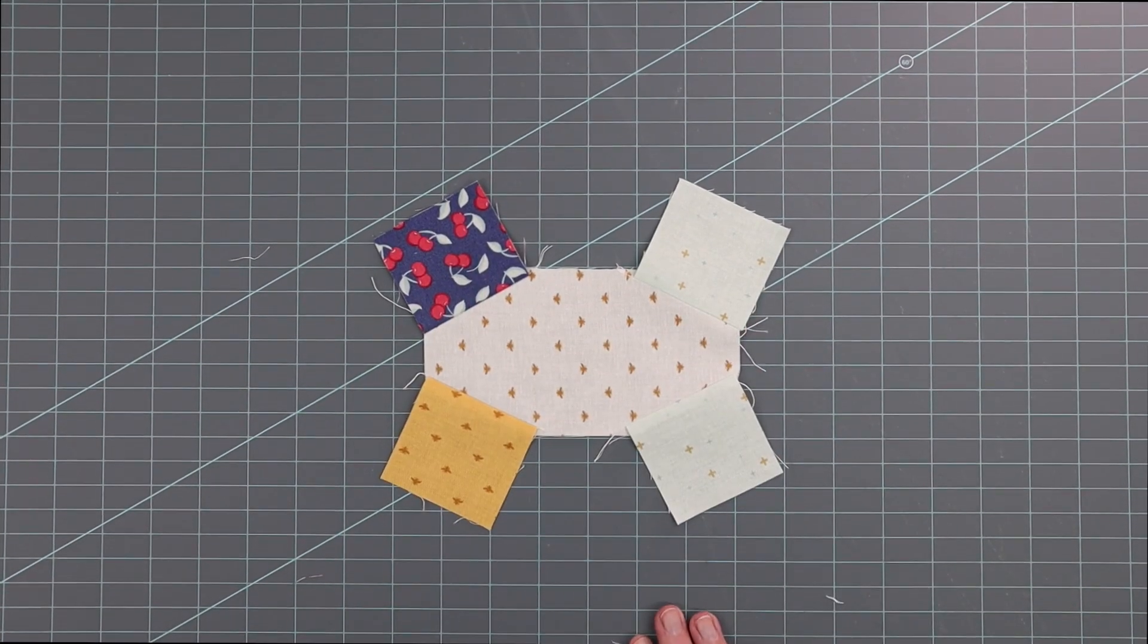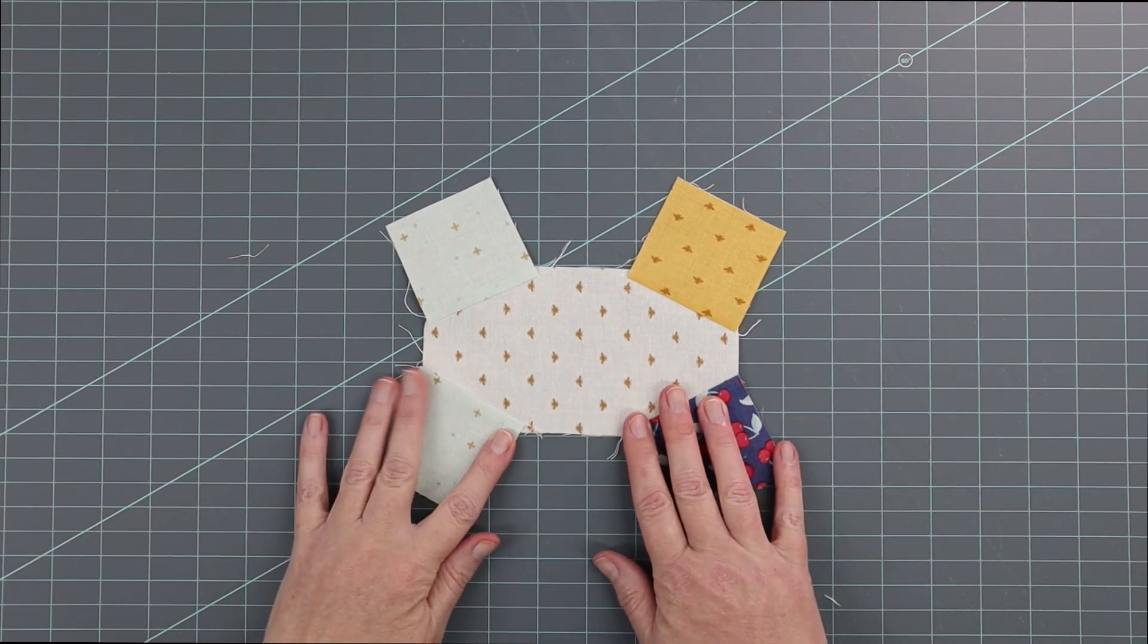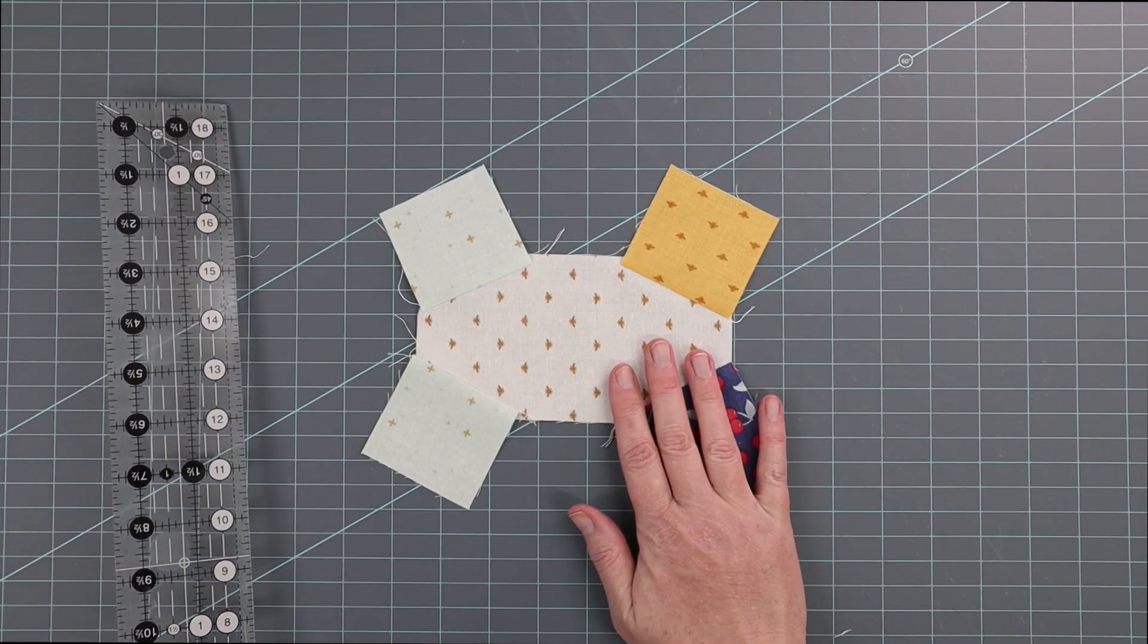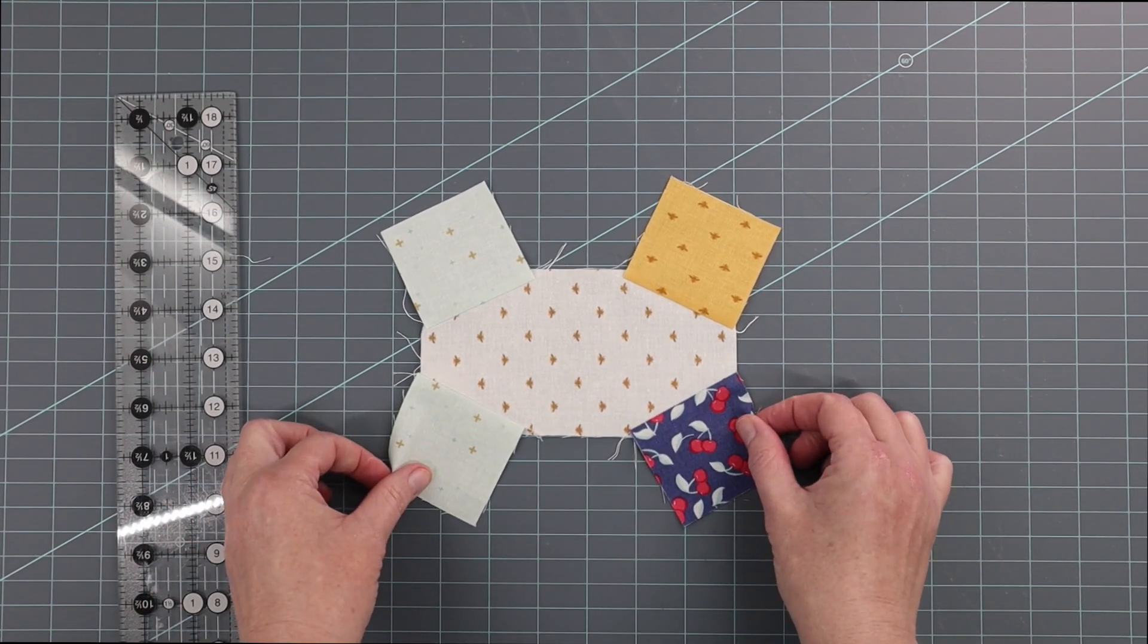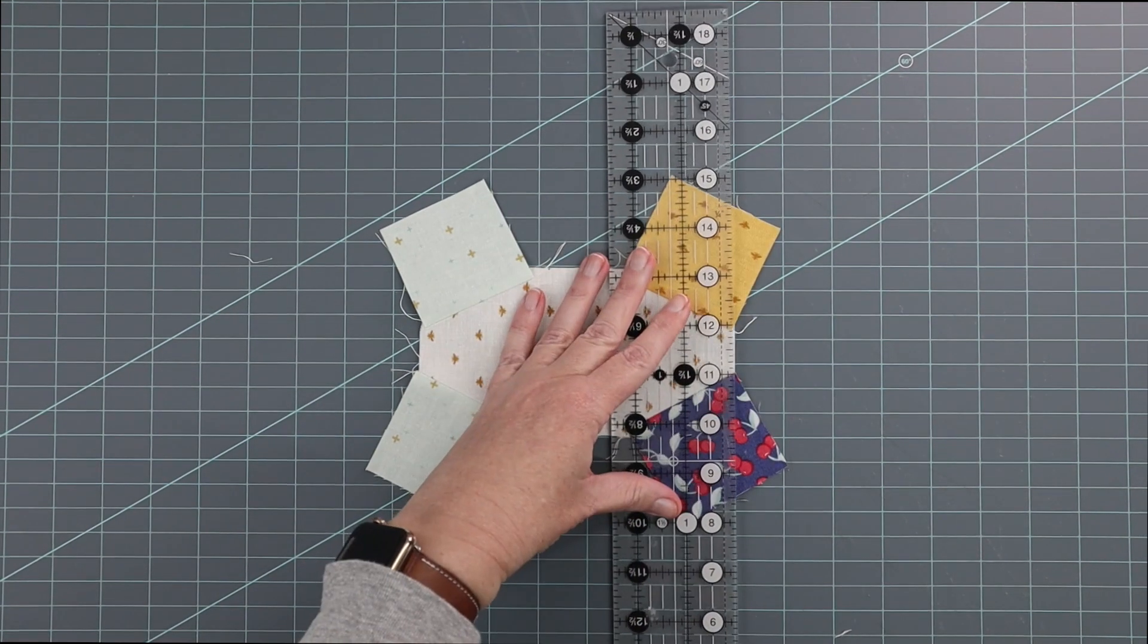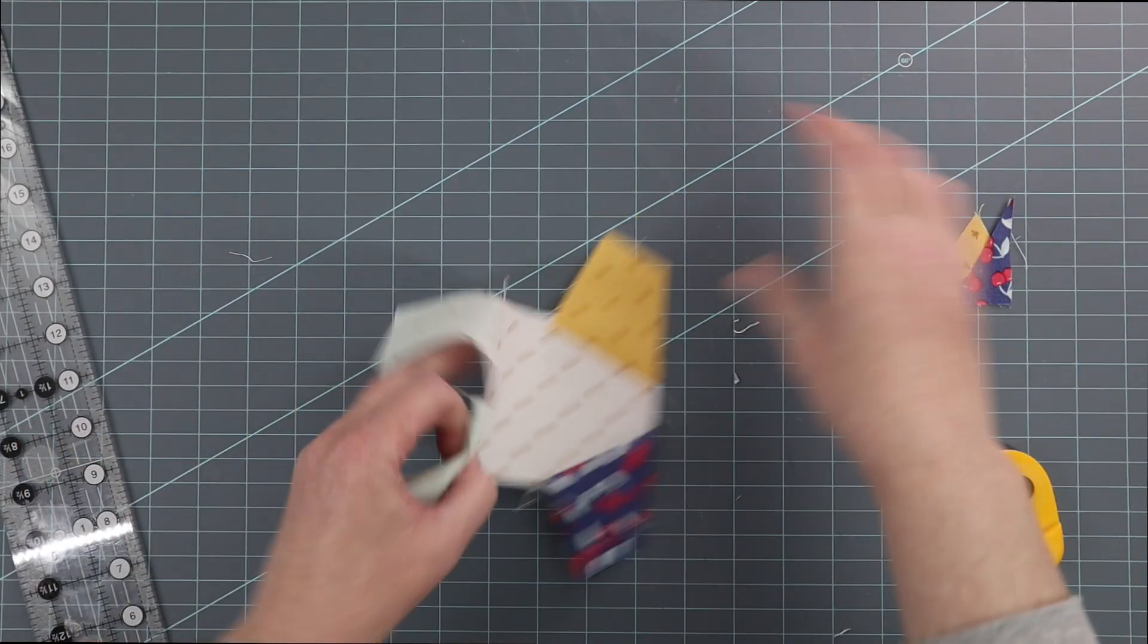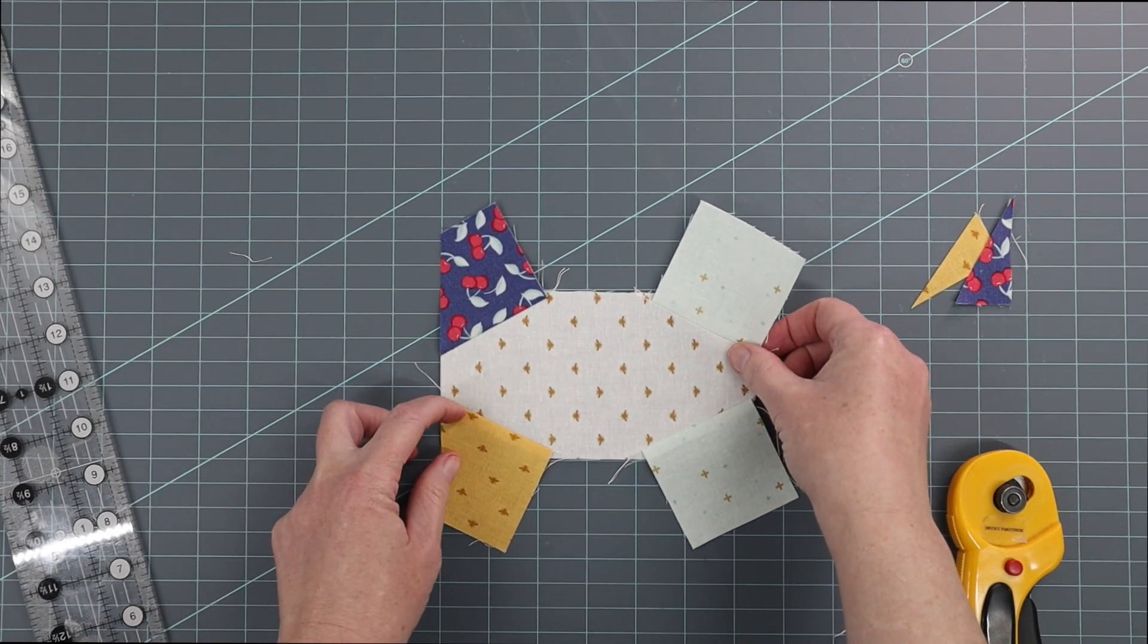Here I've got the wing section pressed. I've sewn the squares to all four of those angled corners, and what you need to do now is just square it up to three and a half by six and a half, which is what that piece was before you started. This is really simple—you're just going to go with the straight lines already existing on the white fabric or the wing fabric in this case.